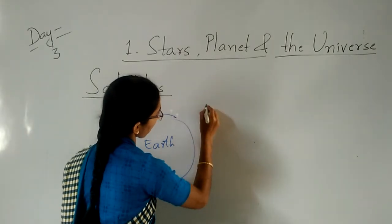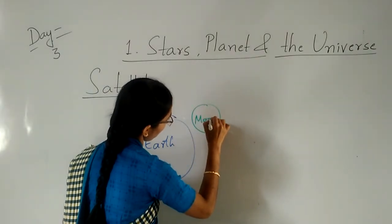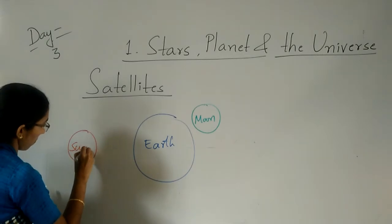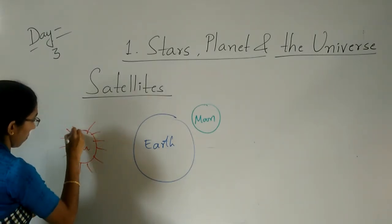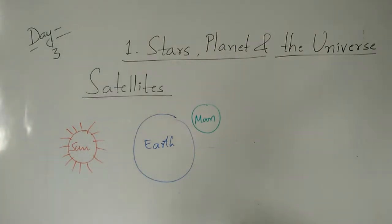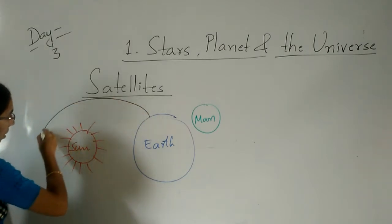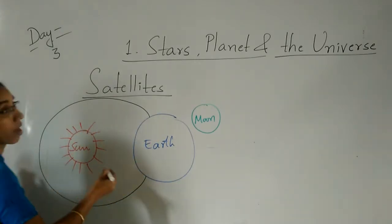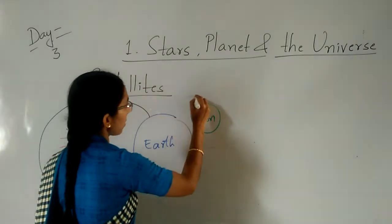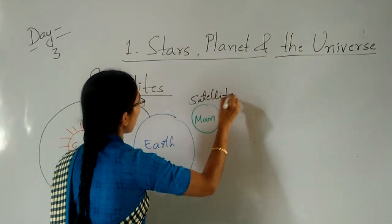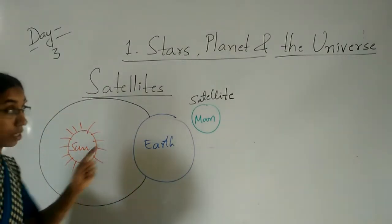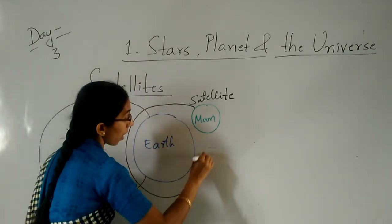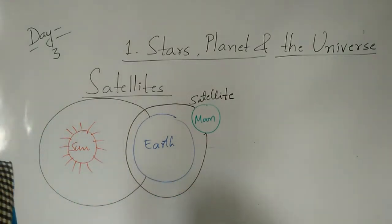And here is the sun. You can see that the earth rotates around the sun, but the moon — which is the natural satellite — rotates around the earth only.